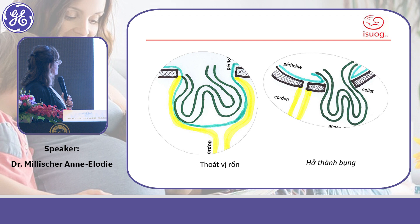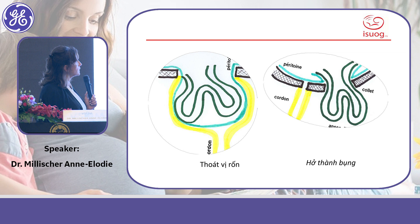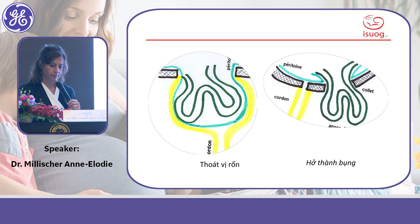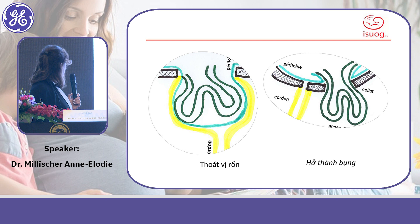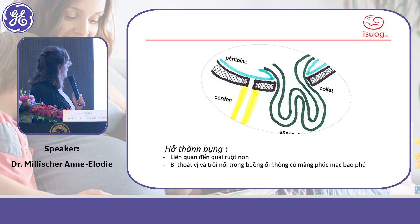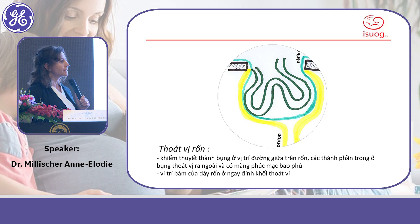The exomphalus is surrounded by peritoneum with the cord insertion at the base of the sac. In gastroschisis, the bowel is completely free-floating inside the amniotic fluid, with the cord insertion just to the side. Gastroschisis involves the small bowel, and sometimes also the large bowel, whereas omphalocele is a midline supra-umbilical wall defect that may contain bowel and liver.